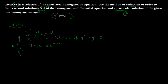Now y2 prime — the derivative of y2 — we apply the product rule here. So we have u'·e^(-2x) plus u times (-2)e^(-2x), giving us y2' = u'·e^(-2x) minus 2u·e^(-2x). Now we need to find y2 double prime.